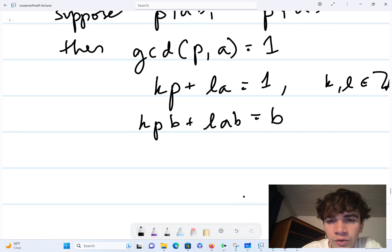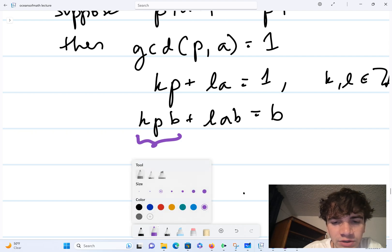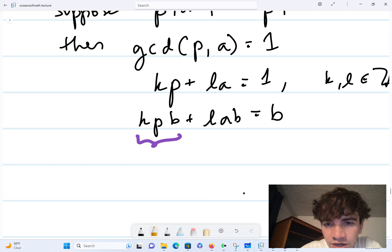But now we know that p divides this term clearly because it's just staring us in the face—it's one of the factors. But also p divides this term in the equation, so p divides ab by assumption.